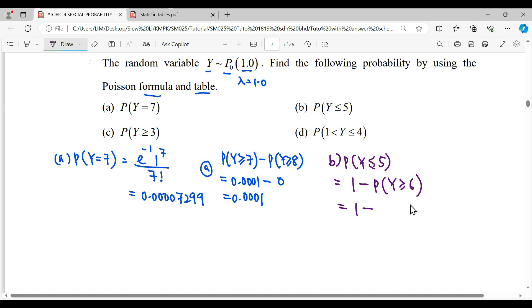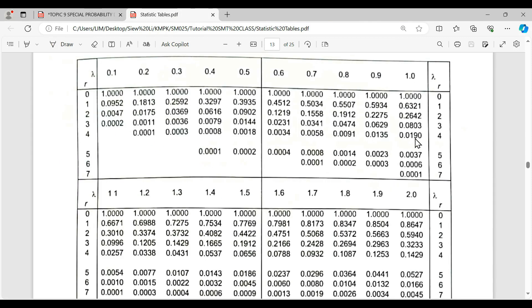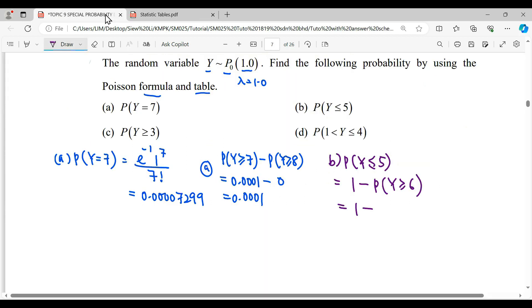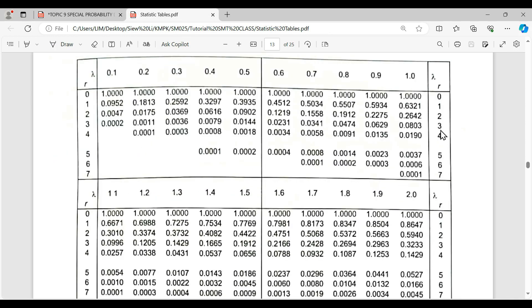For question (c), probability Y more than or equal to 3. For more than or equal, we can read the table directly. For the reading 3, we have 0.0803.